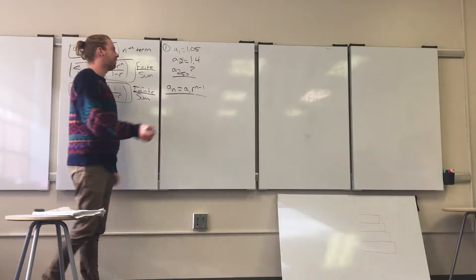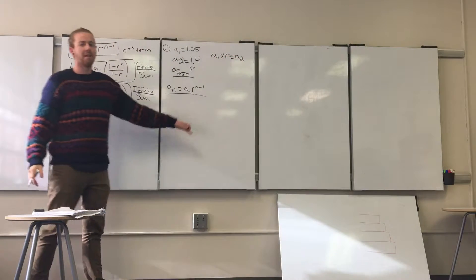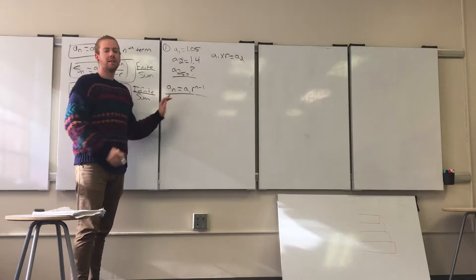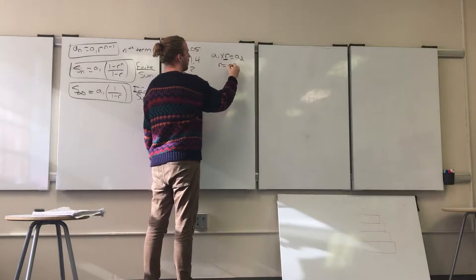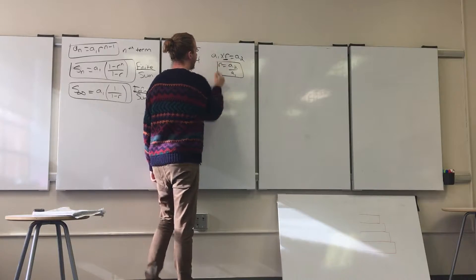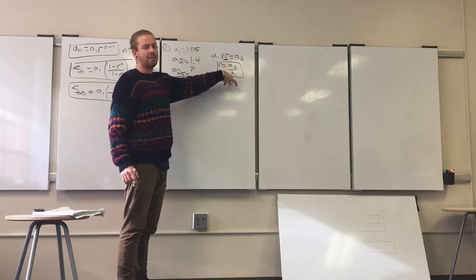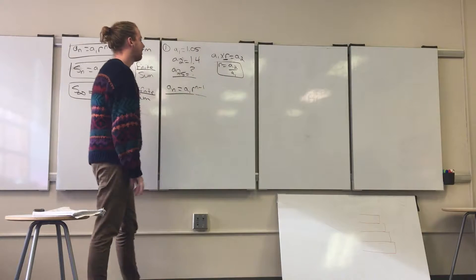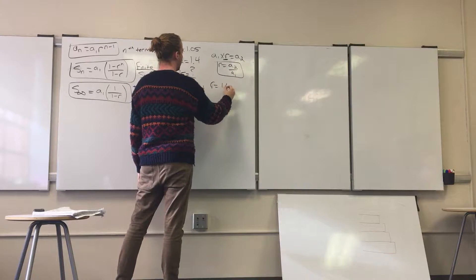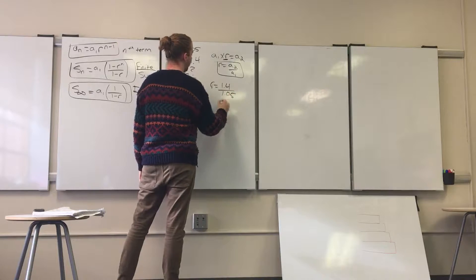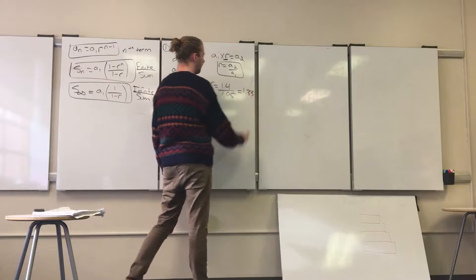If you take A_sub_1 and multiply it by r, that gives you A_sub_2. So to find r by itself, divide both sides by A_sub_1: r equals A_sub_2 over A_sub_1. In general, r equals the next term divided by the previous term. So r equals 1.4 divided by 1.05, which gives us r equals 1 and one-third, or approximately 1.33.